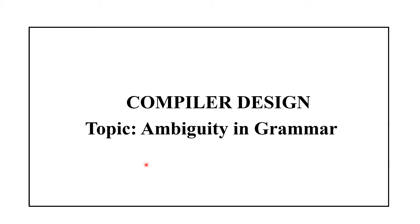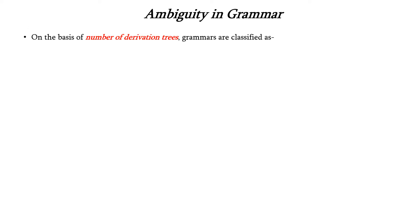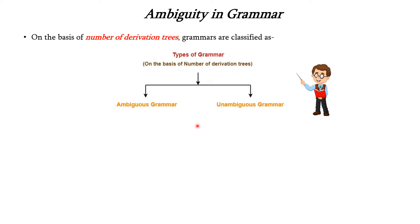Hello everyone. In our previous lecture we have seen about the concept of derivation and parse tree in compiler design. Now let us see about ambiguity in grammar. On the basis of number of derivation trees, grammars can be classified into two types: ambiguous grammar and unambiguous grammar.